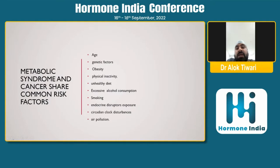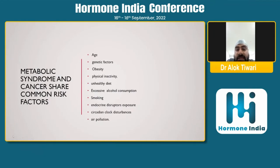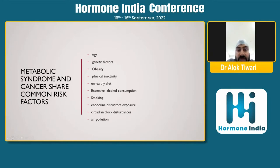With aging, we have more risk of cancer. There are also certain genetic factors — familial history of conditions like BRCA — and the same genetic familial histories are seen in diabetes too. Obesity is a common factor, along with physical inactivity, unhealthy diet, excessive alcohol consumption, smoking, endocrine exposure, circadian rhythm disturbance, and air pollution. All these factors are not completely dissociated from each other and can contribute to both conditions.